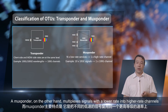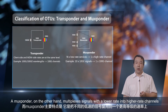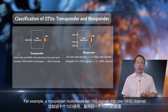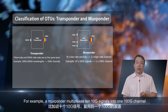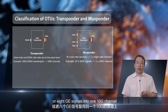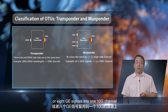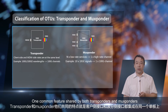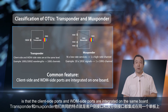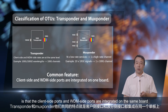A muxponder, on the other hand, multiplexes signals with a lower rate into higher rate channels. For example, a muxponder multiplexes 10 x 10G signals into one 100G channel, or 8GE signals into one 10G channel. One common feature shared by both transponders and muxponders is that the client-side ports and WDM-side ports are integrated on the same board.